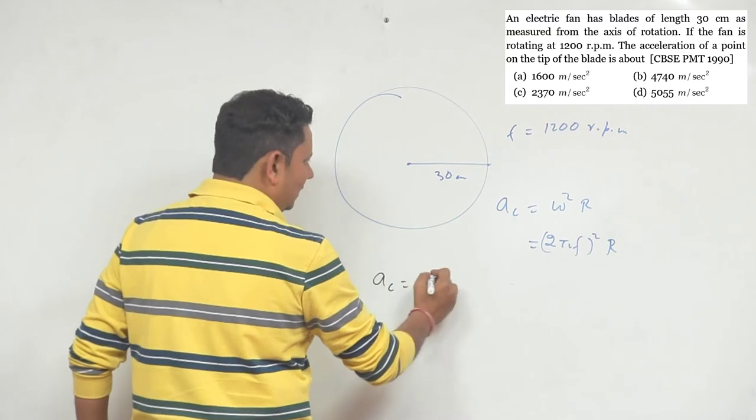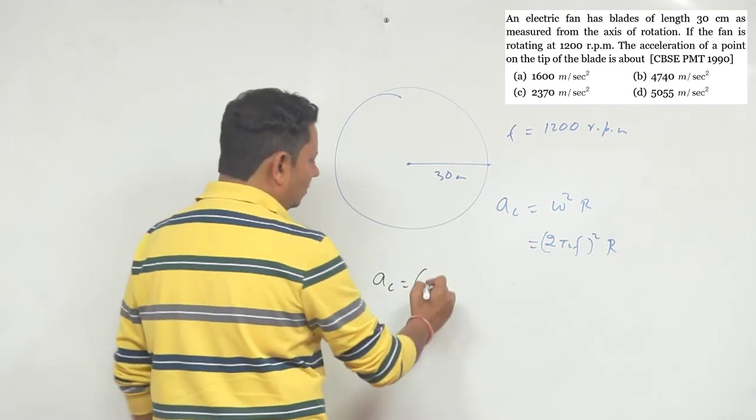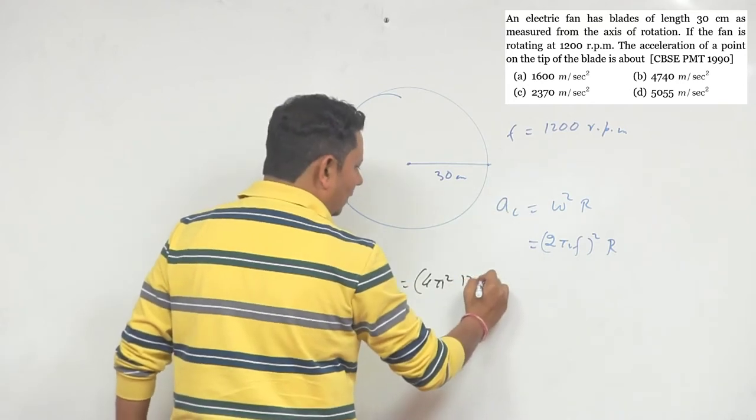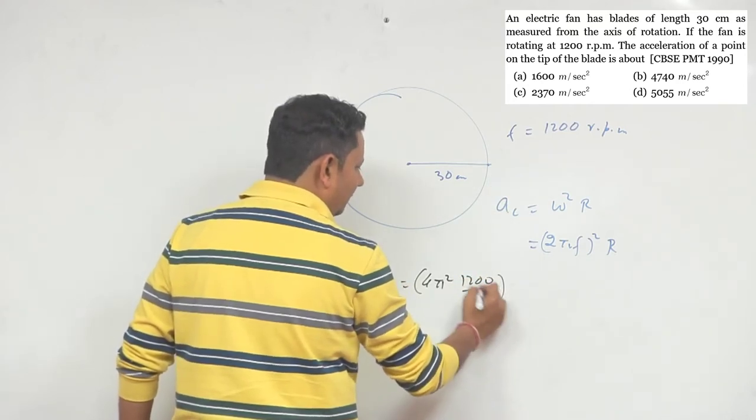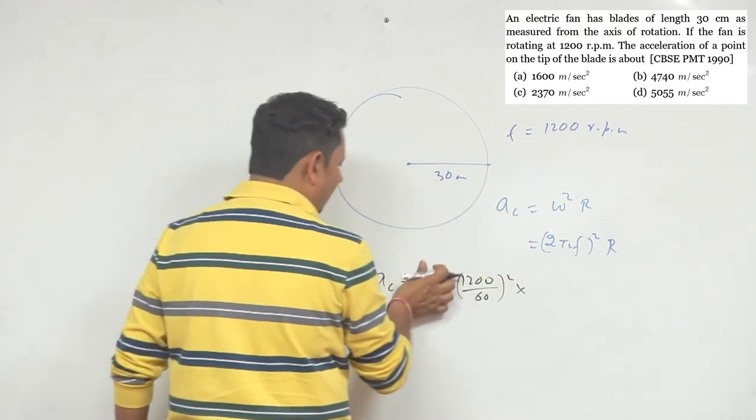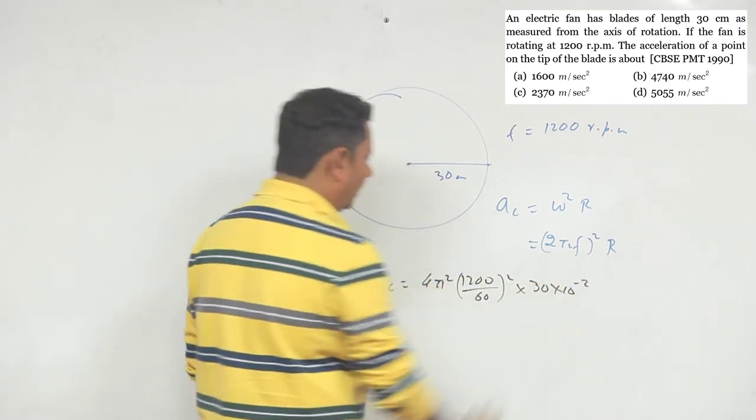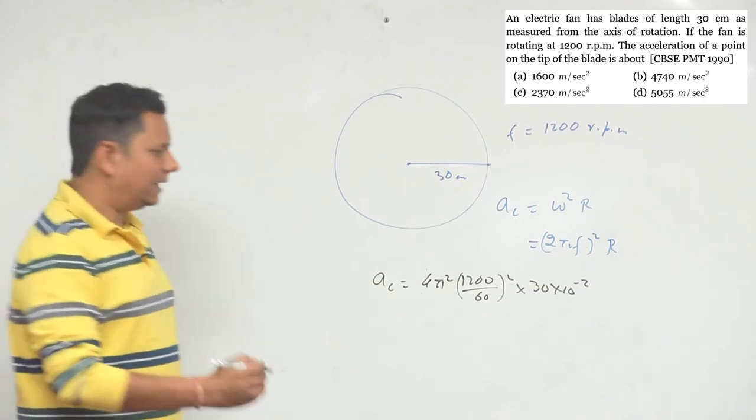So a_c, centripetal acceleration, we have 4 pi square f. f we have 1200 divided by 60, squared, multiplied by r. r value is 30 centimeters, 30 into 10 to the power minus 2. So solving this will get our answer.